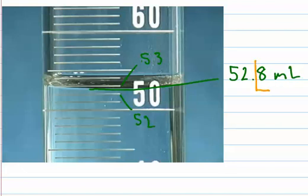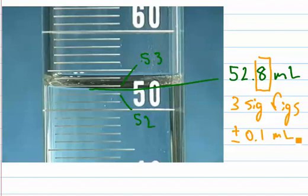Indicating that our position of uncertainty lies in the tenth of a milliliter position. And by indicating this with three sig figs, we are saying that this measurement is plus or minus 0.1 milliliters.